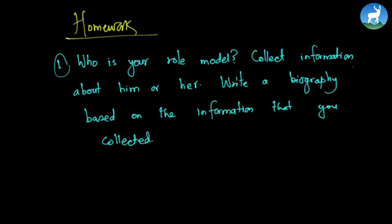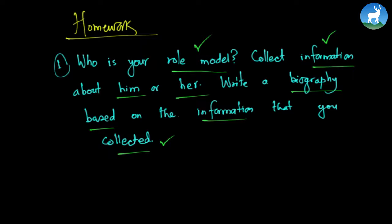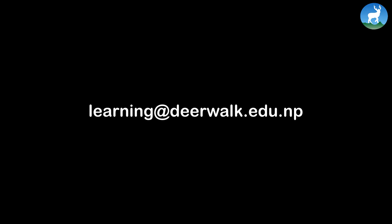With this, we have come to the end of today's class. I'm going to give you some homework as usual. I want you to find out who is your role model — maybe it's Mahatma Gandhi, or maybe it's Steve Jobs, or maybe it's Lakshmi Prasad Devakota. Think deeply and be introspective to find your role model. After that, collect information about them. You have Google, Wikipedia, libraries, resources, and newspapers. Collect as much information as you can and write a biography based on that information. You will only need to write a three-paragraph-long biography and it's pretty easy. If you have any questions or suggestions regarding this video series, feel free to write us at learning@deawalk.edu.np. Thank you.